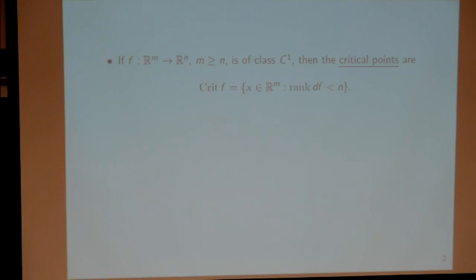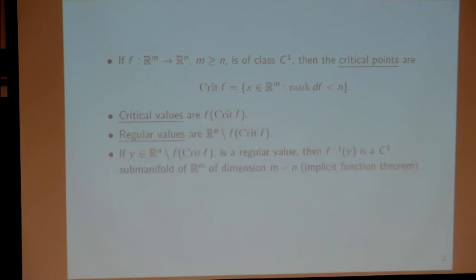The classical Sard theorem: we consider mappings of class C¹ between Euclidean spaces, going from a larger dimension to a dimension which is less than or equal. The critical points are those points where the rank of the derivative is not maximal—less than the dimension of the target space. The critical values are points in the image of the critical set, and everything else is the set of regular values.